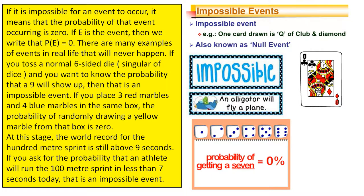At this stage, the world record for the 100m sprint is still above nine seconds. If you ask for the probability that an athlete will run the 100m sprint in less than seven seconds today, that is an impossible event.